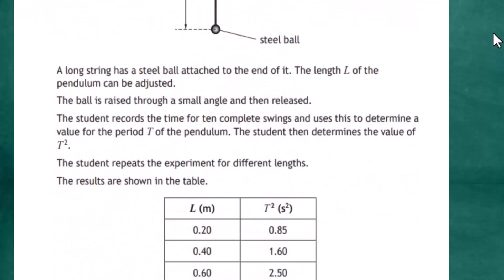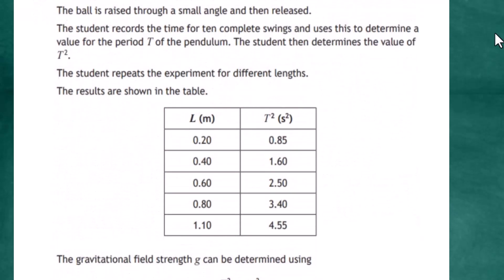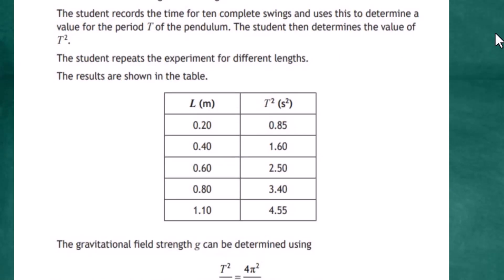The student repeats the experiment for different lengths and the results are shown in the table. The left-hand column shows the length in meters, changed from 0.2 meters up to 1.10 meters, and for each length the period squared is recorded, ranging from 0.85 up to 4.55.